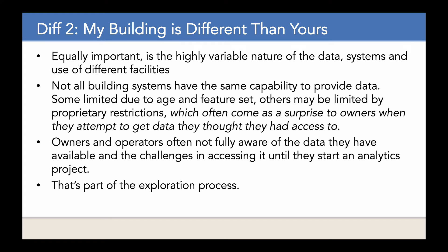A different approach is required when we're looking at analytics. There's another key difference: all buildings are different. My building is different than yours. Buildings are highly variable — the data you can get, the systems you have, how the facilities are used. Not all building systems have the same capability to provide data. Some may be limited due to the age of the system or the feature set they had. Others are sometimes limited by proprietary restrictions. And often that comes as a surprise to owners when they start an analytics project and attempt to get data that they thought they were going to have easy access to. That is part of the exploration process. Owners and operators are often not fully aware of even what data they have and the challenges in accessing that data.